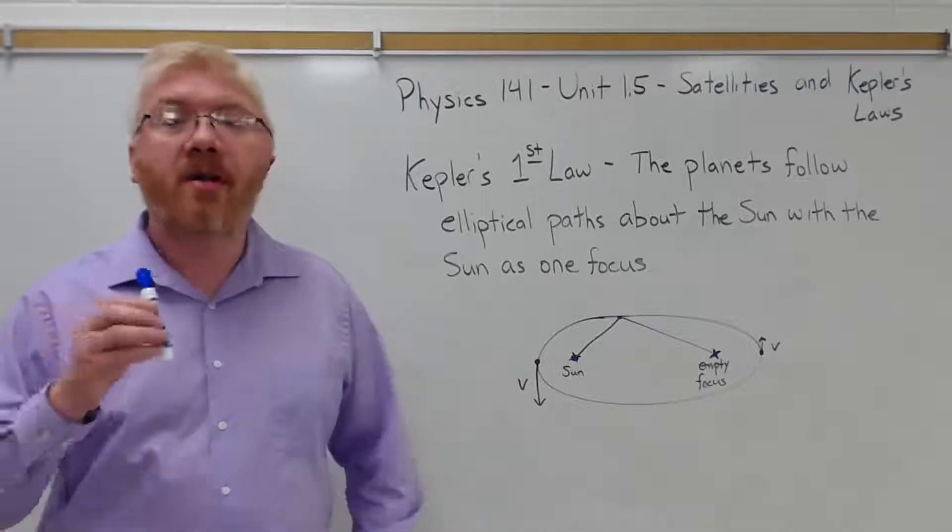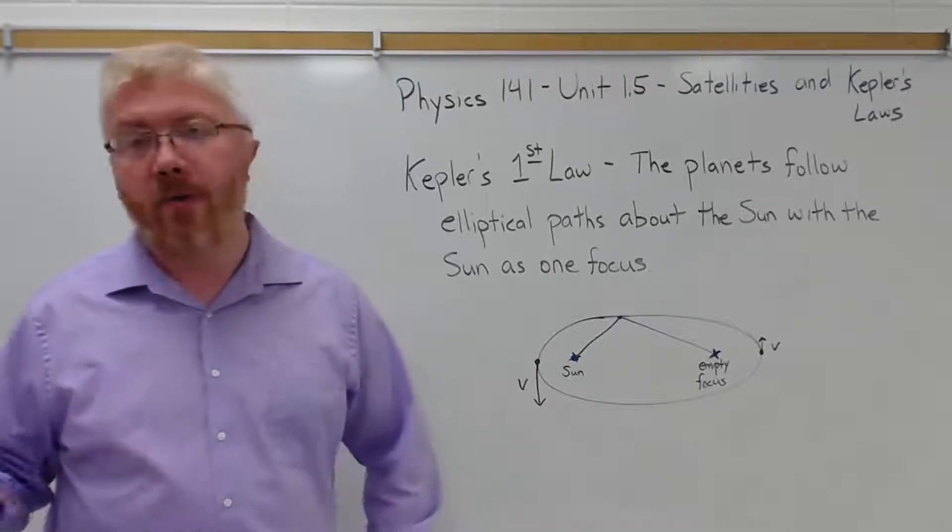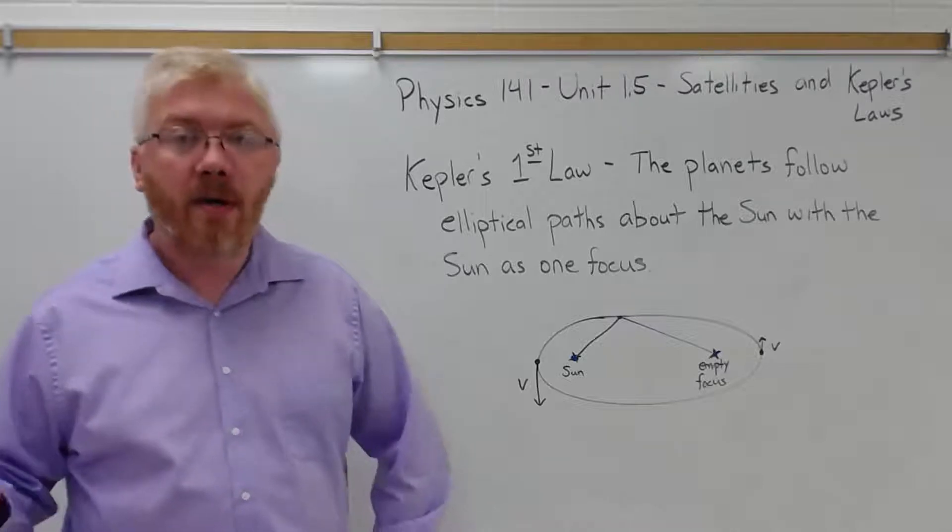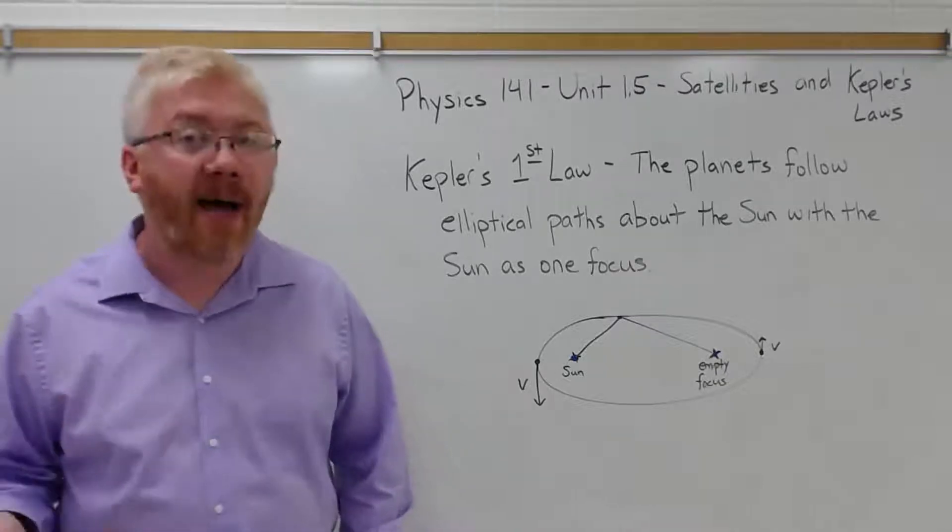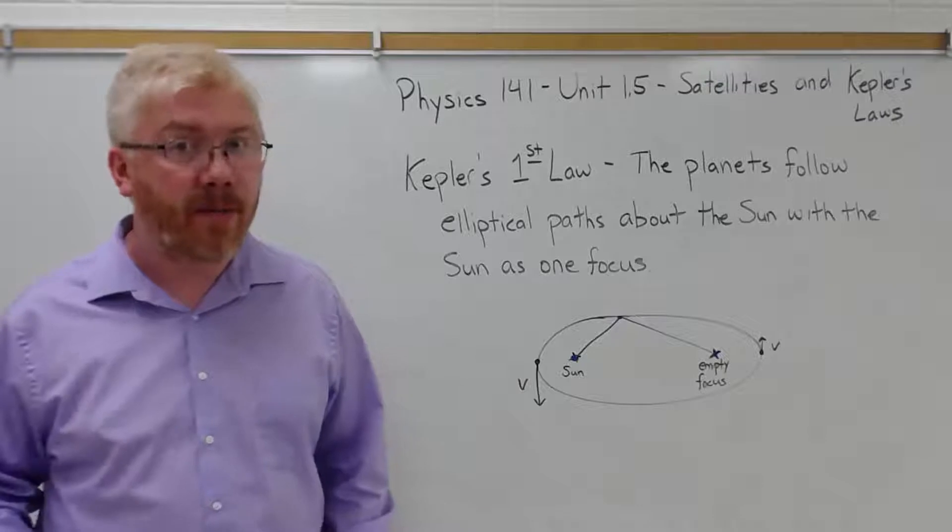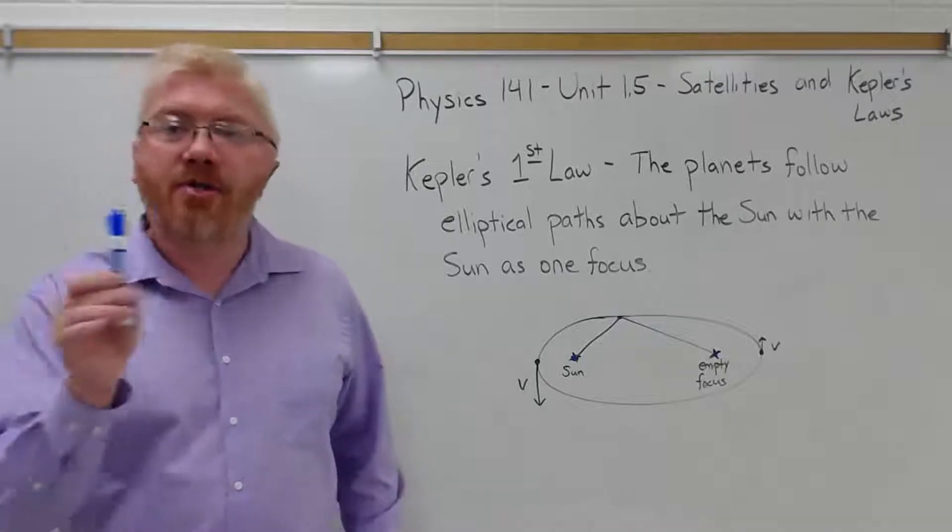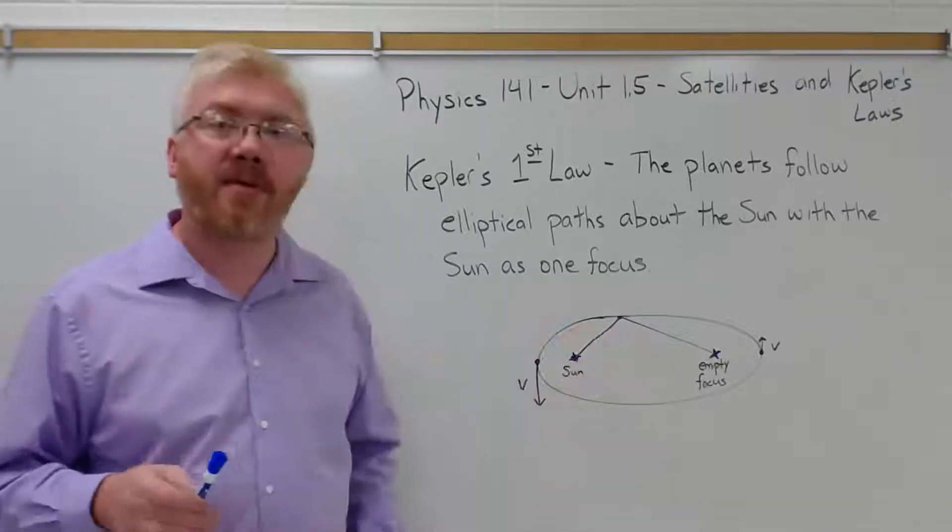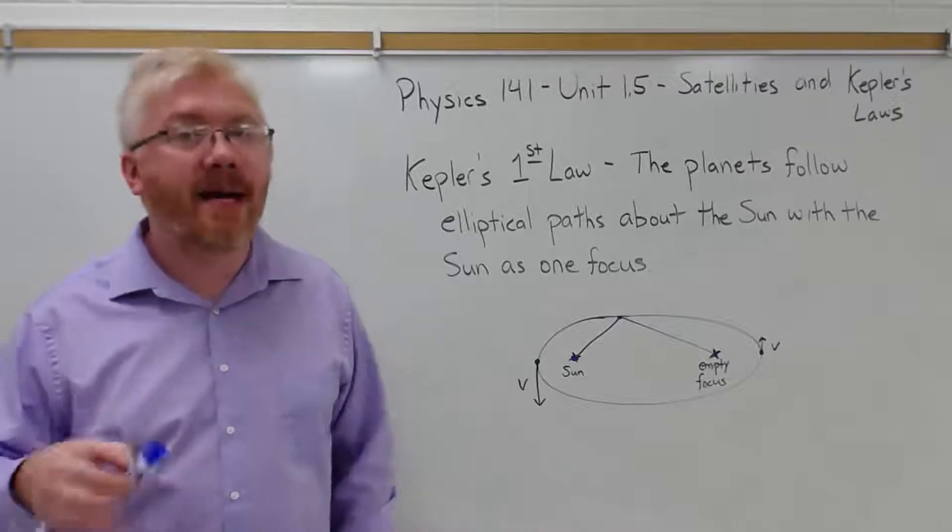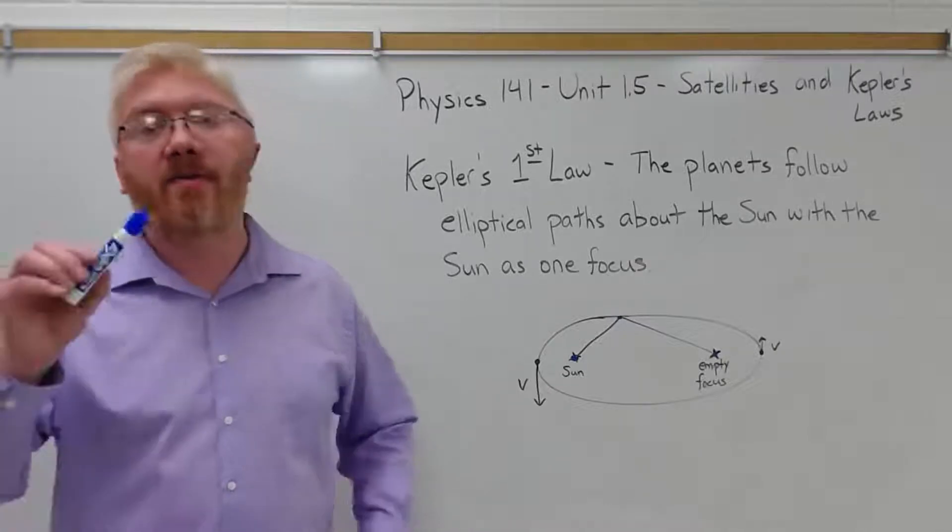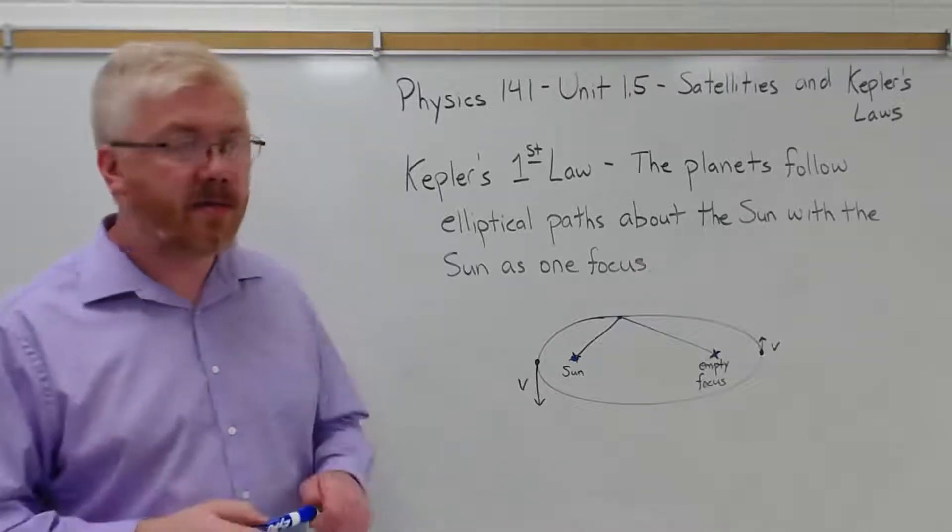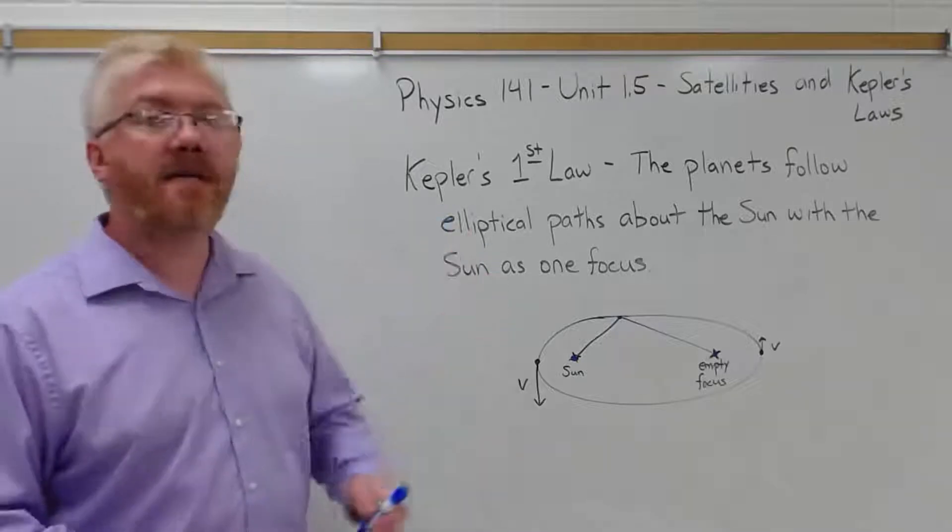Earth is actually closest to the Sun in around January, when the northern hemisphere is in its winter, and furthest from the Sun in July, when the northern hemisphere is in its summer. That distance change between the closest and the furthest is so small for Earth, it does not contribute to the seasons. The tilt of the Earth's axis contributes to the seasons. So this is Kepler's first law.